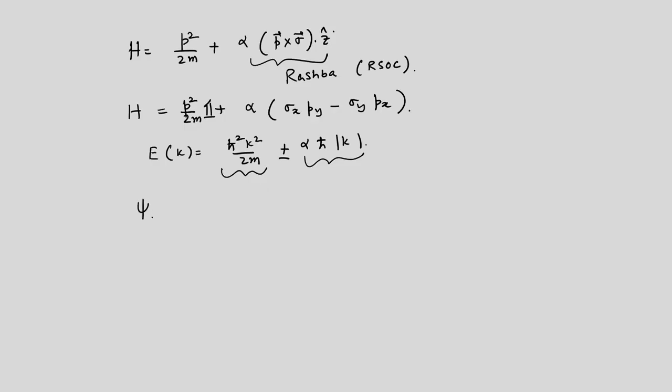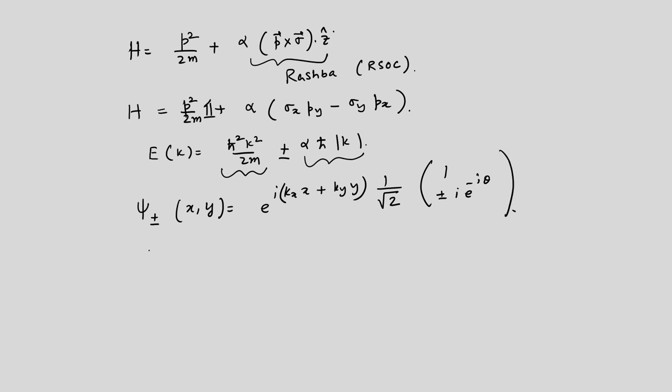The eigenfunctions in 2D are ψ = e^{i(k_x x + k_y y)} · (1/√2)(1, ±i e^{−iθ})^T, where θ = arctan(k_y/k_x) and p_x = ℏk_x, p_y = ℏk_y. This is the complete single-particle solution, more involved than usual due to the 2×2 Pauli matrix structure.